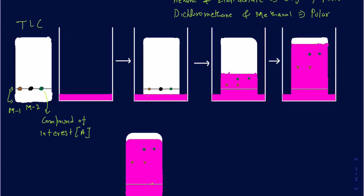Organic compounds don't really have any colors, so when putting organic compounds onto the baseline and observing their movements, you have to use a UV lamp because many organic compounds are UV active, as long as they have conjugated double bonds.